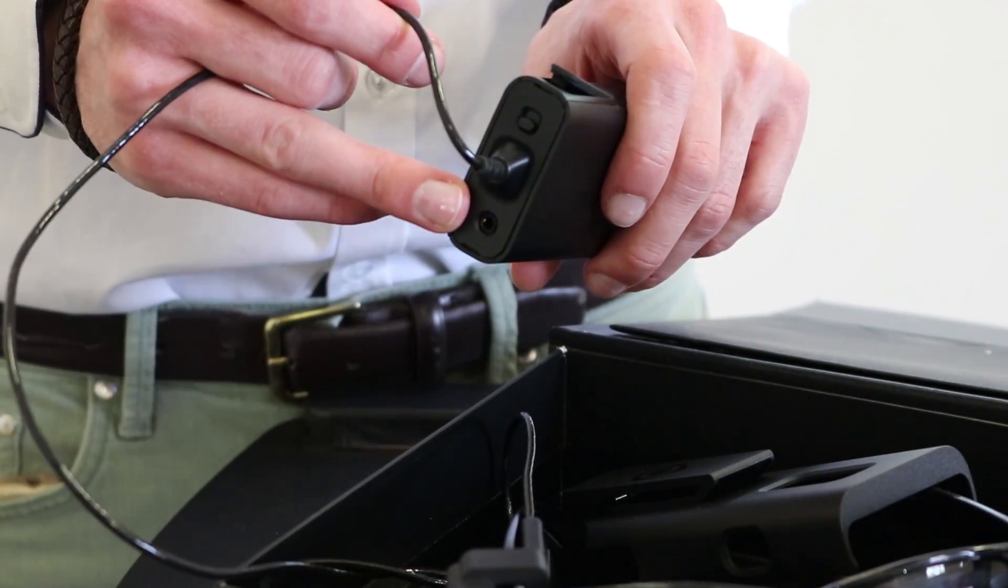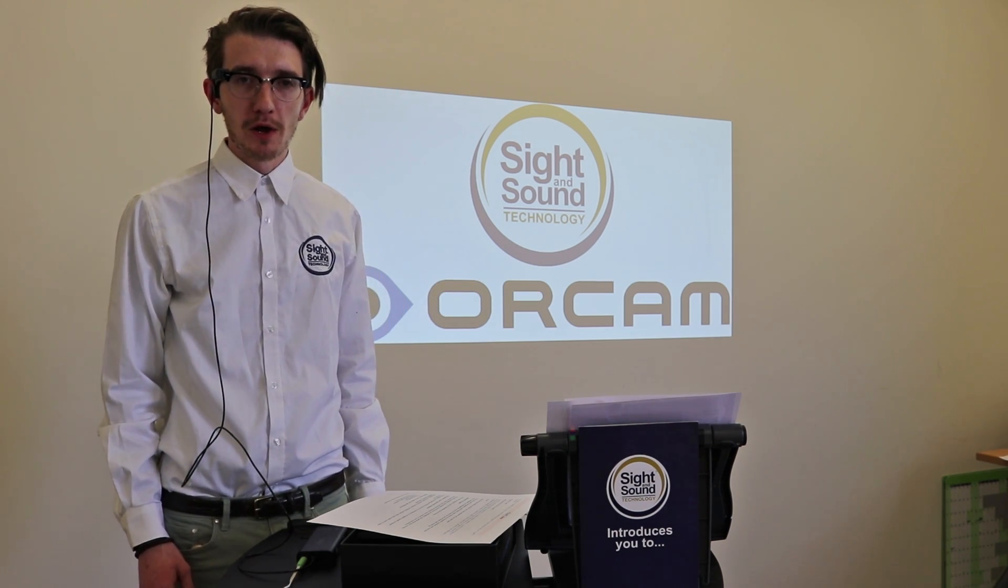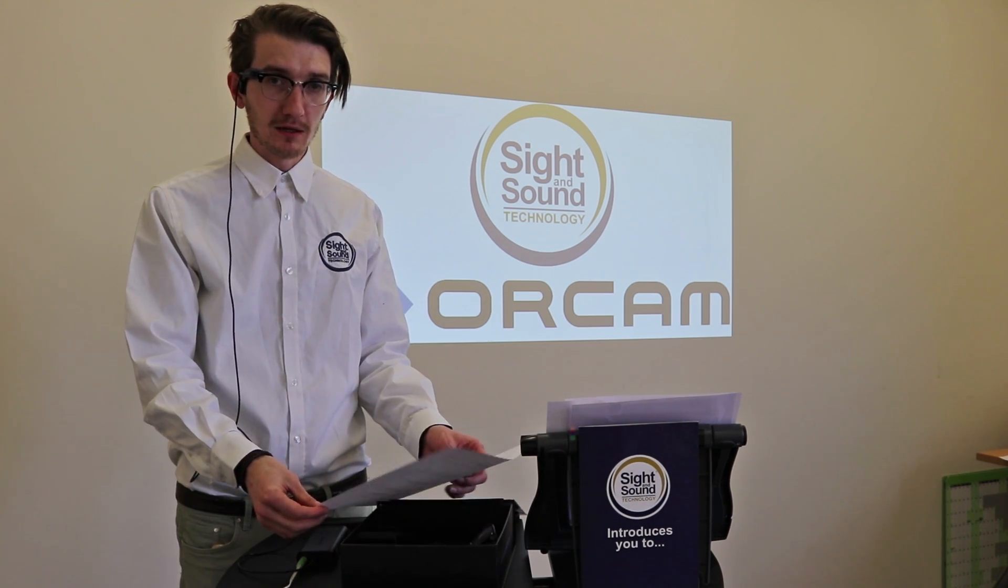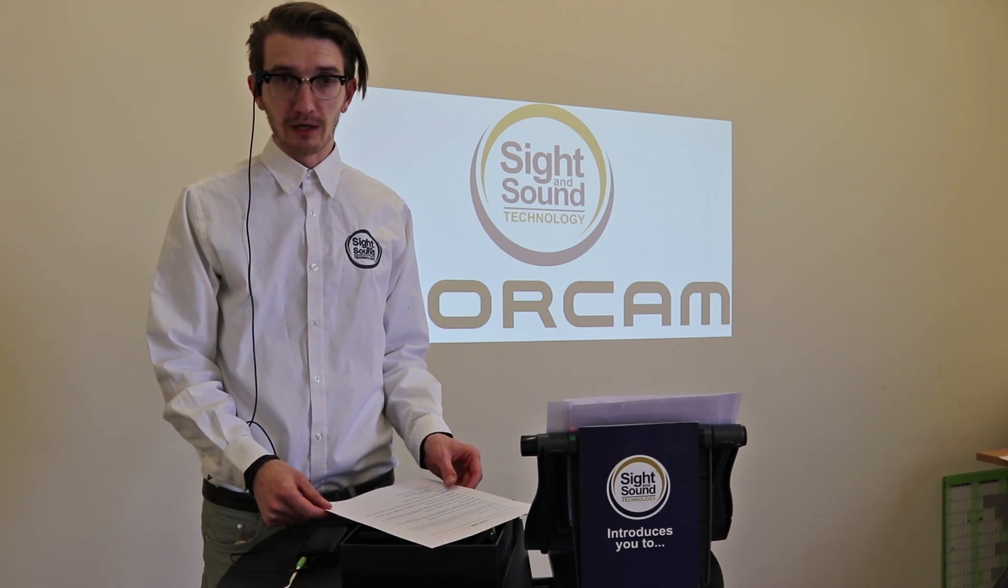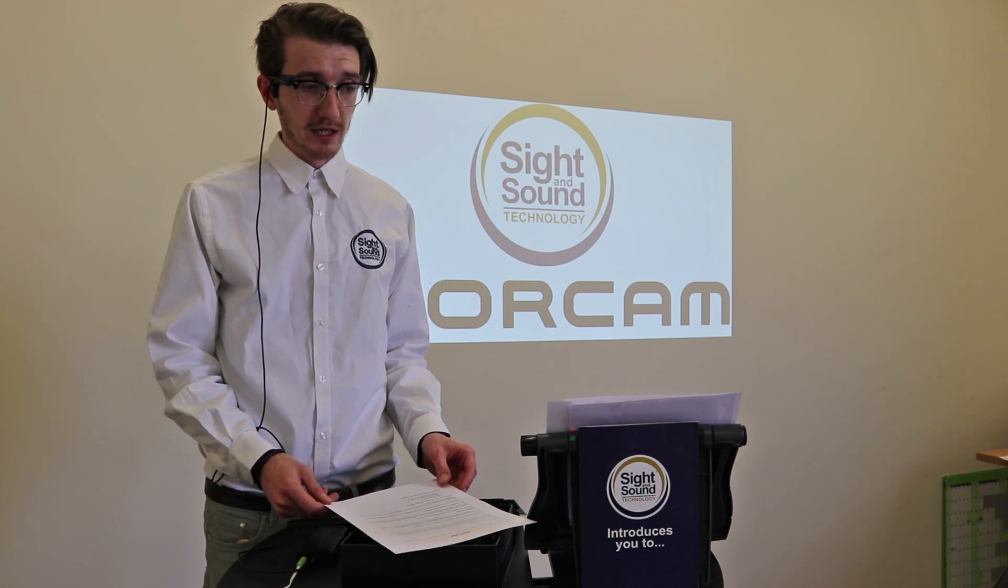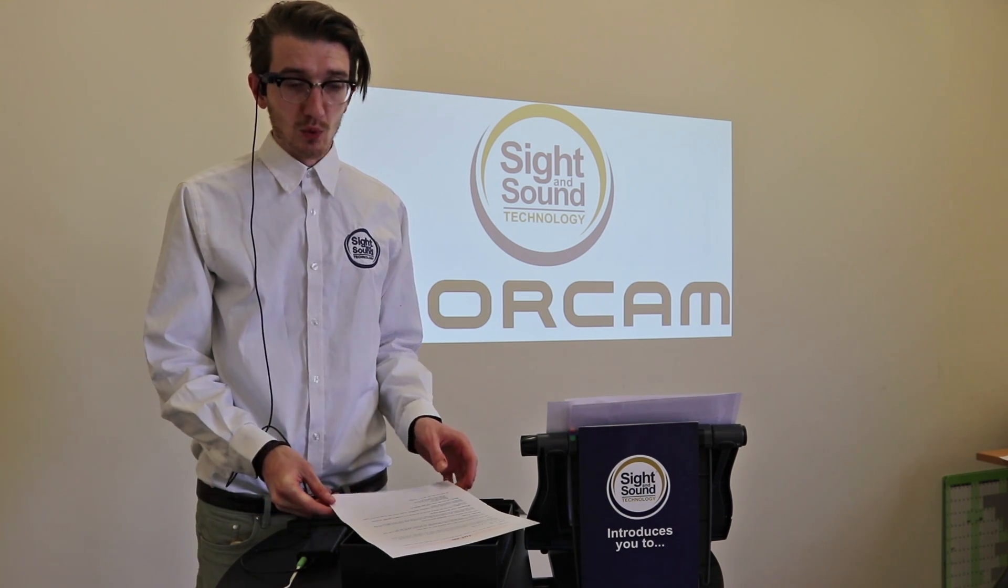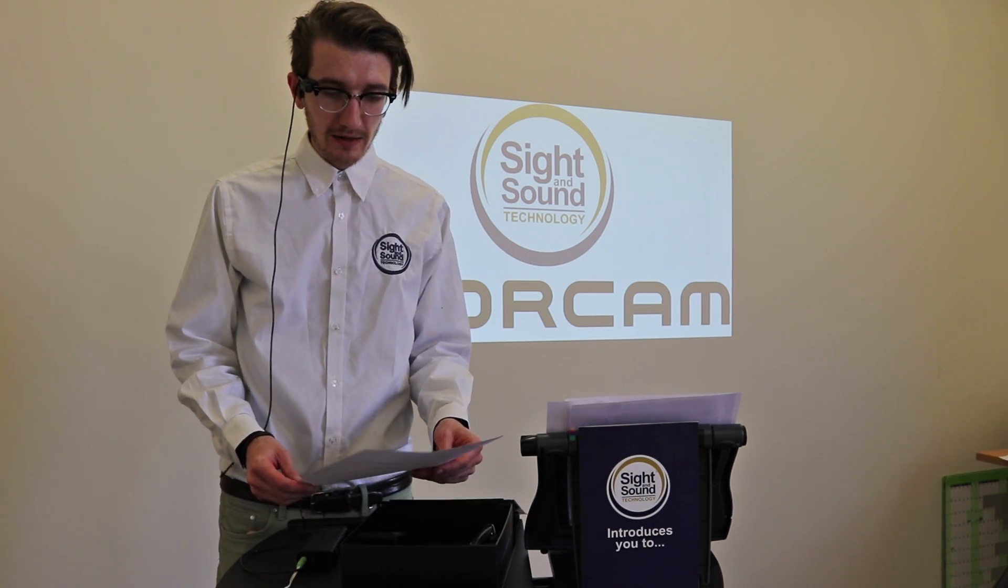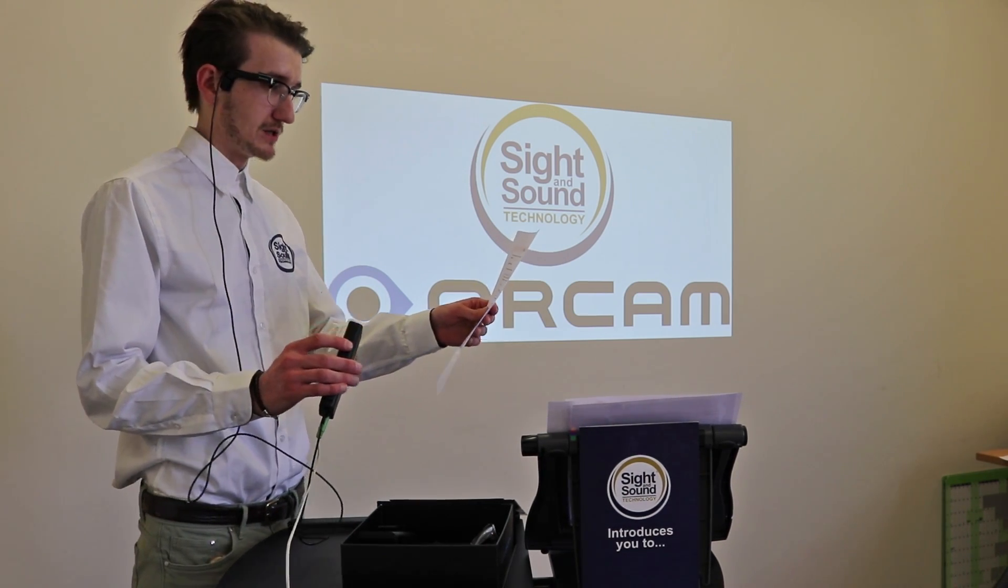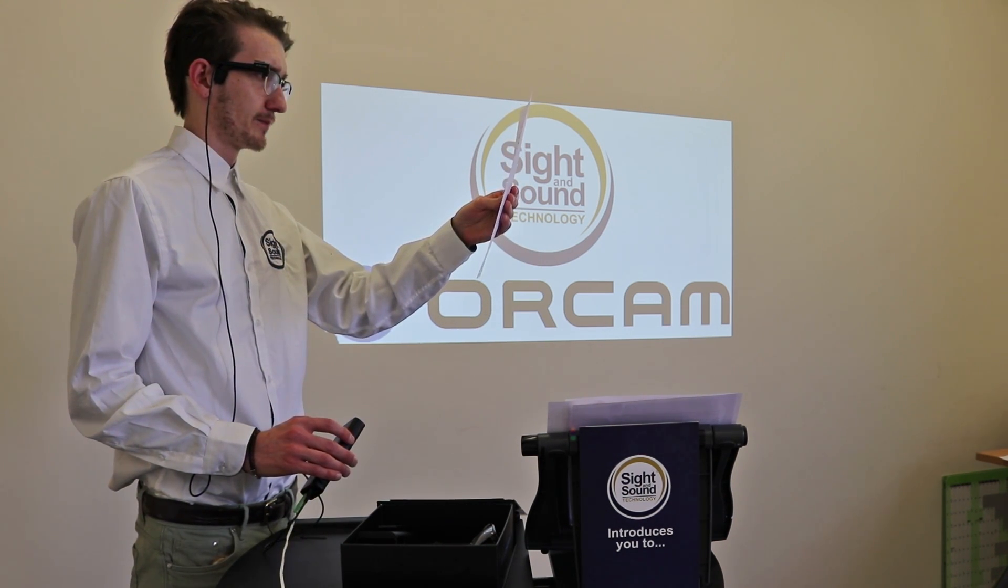So the OrCam comes in two variations: we have My Reader and My Eye. The My Eye is the one we've been demonstrating today. The My Reader is great for text reading but it does not do the object recognition or facial recognition. The My Reader also has a one year warranty whereas the My Eye has a two year warranty. So let's demonstrate how to do the text reading. I'll do it showing you with the base unit so I'll press the trigger button on the side of the base unit.